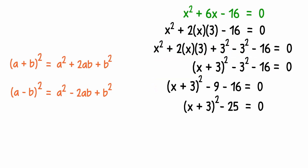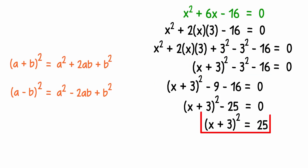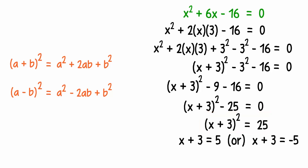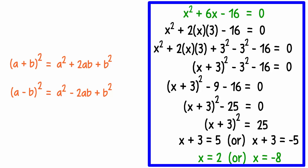Now I think you know how to proceed. We transpose 25 to the other side, and this tells us that x + 3 will equal either 5 or negative 5. We get the value of x as 2 or negative 8. The important part here is to know which term to add — here we added 3². And to keep the equation balanced, we also subtracted 3². This was the completing the square method.